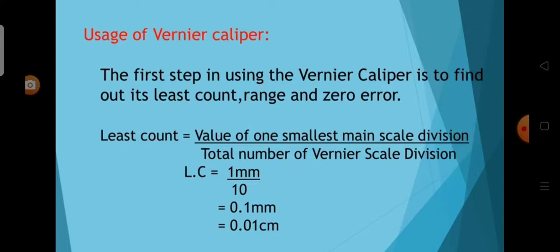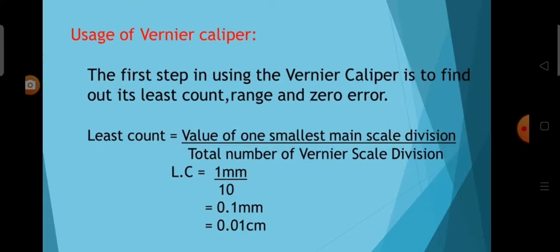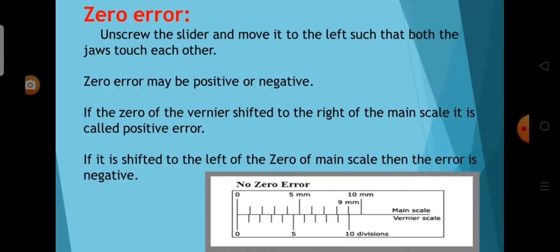Now we will see about the usage of Vernier Caliper. The first step is to find out its least count, range, and zero error. Least count equals the value of one smallest main scale division divided by the total number of Vernier scale divisions. To measure zero error, unscrew the slider and move it to the left such that both jaws touch each other. There are two types of zero error: positive zero error and negative zero error. If the zero of the Vernier scale is shifted to the right of the main scale zero, it is called positive error. If it is shifted to the left, it is called negative zero error.